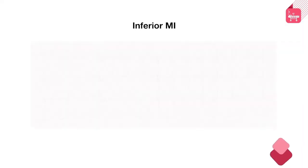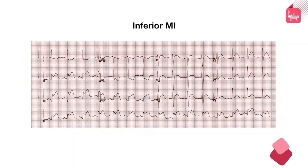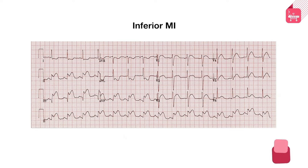This ECG shows gross ST elevation in leads II, III and AVF — the inferior leads — making this a case of inferior STEMI. The reciprocal ST changes are visible as ST depression in lead I and lead AVL.